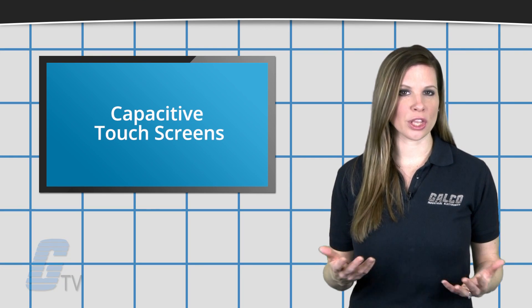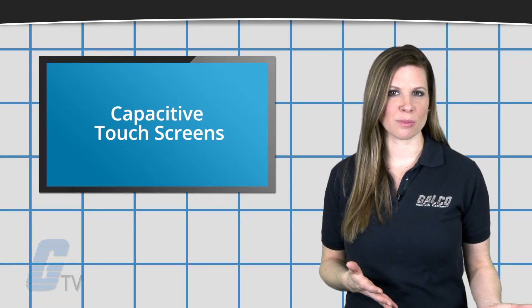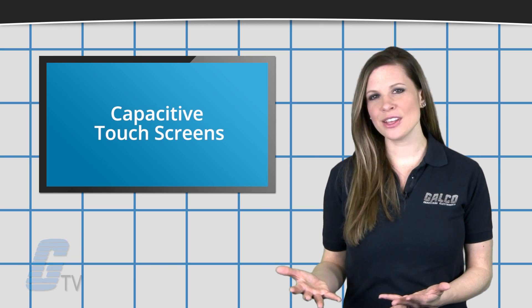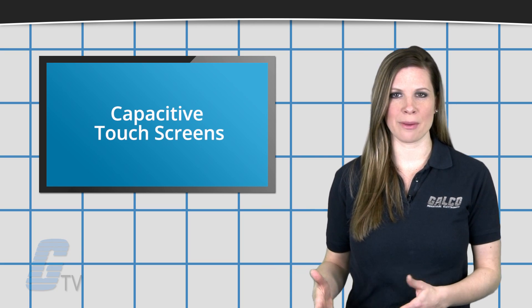Capacitive touch screens are what you will commonly see in modern smartphones and tablets, and they do not rely on pressure at all to determine input.